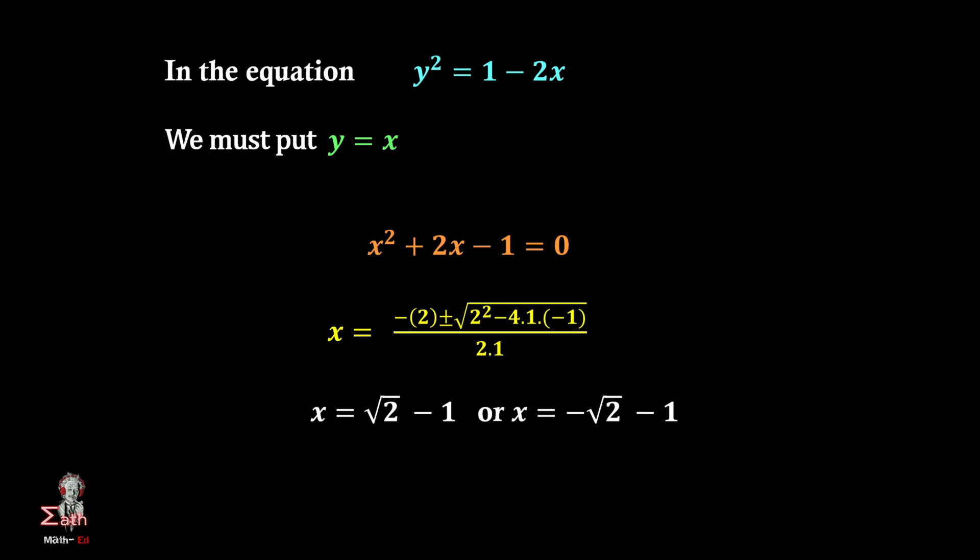Since x is in first quadrant we must take only the positive value. So x will be equal to √2 - 1 and hence x = y = √2 - 1.